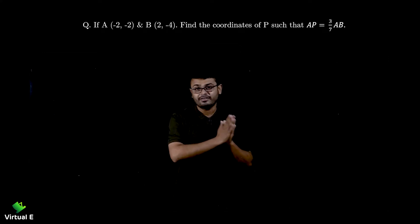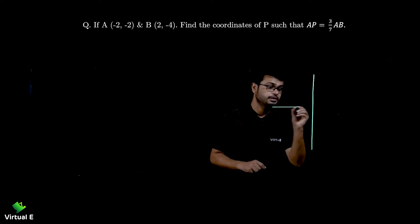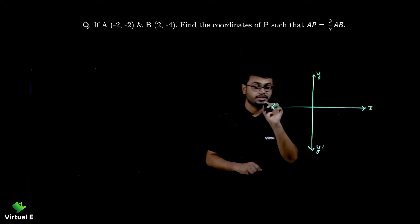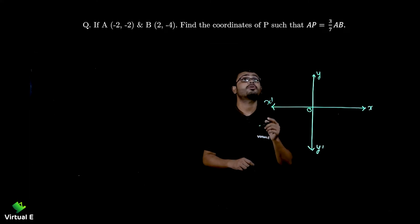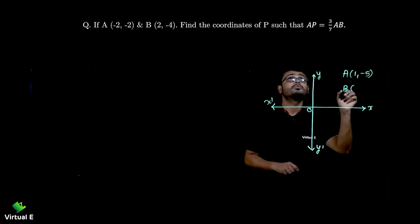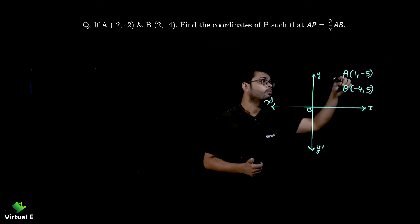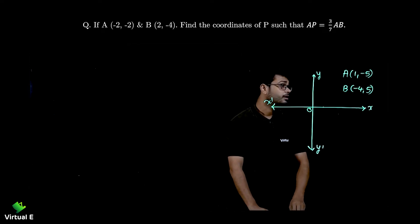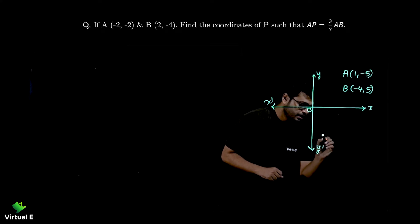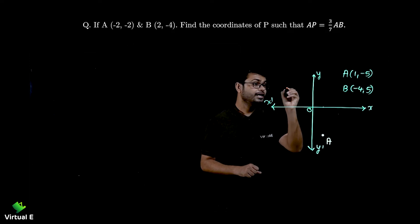Let's start with the graph — I'm doing this for the purpose of understanding. Graph with y-axis and x-axis done. My first point A is 1 comma minus 5: 1 is somewhere here and minus 5 goes down to here. Then point B is minus 4 comma 5: minus 4 is somewhere here and minus 4 comma 5 goes up here.